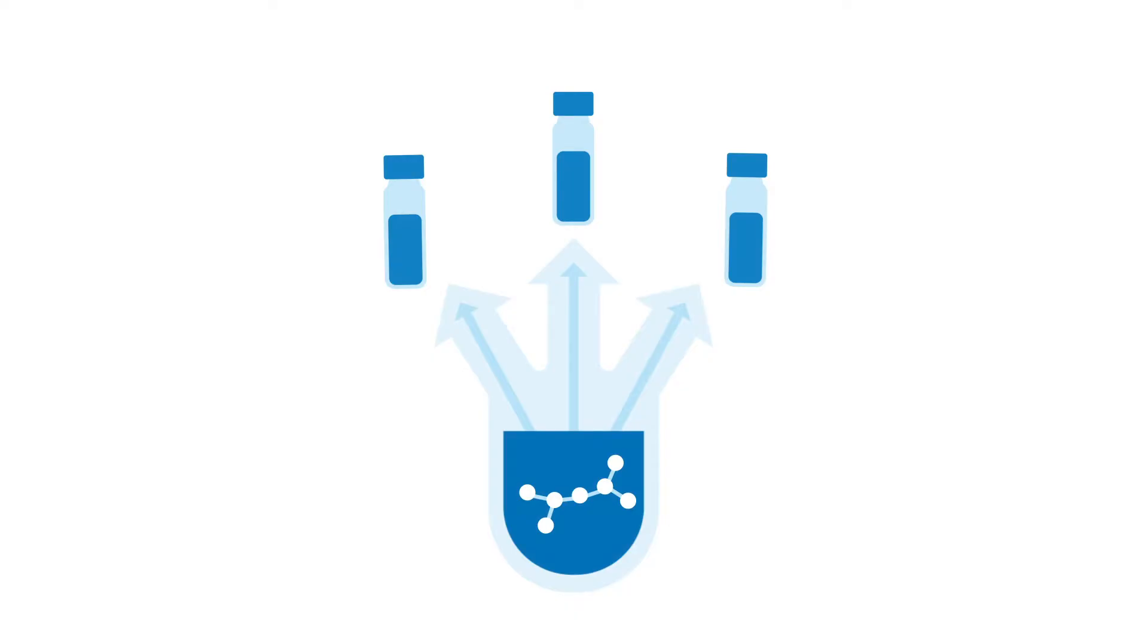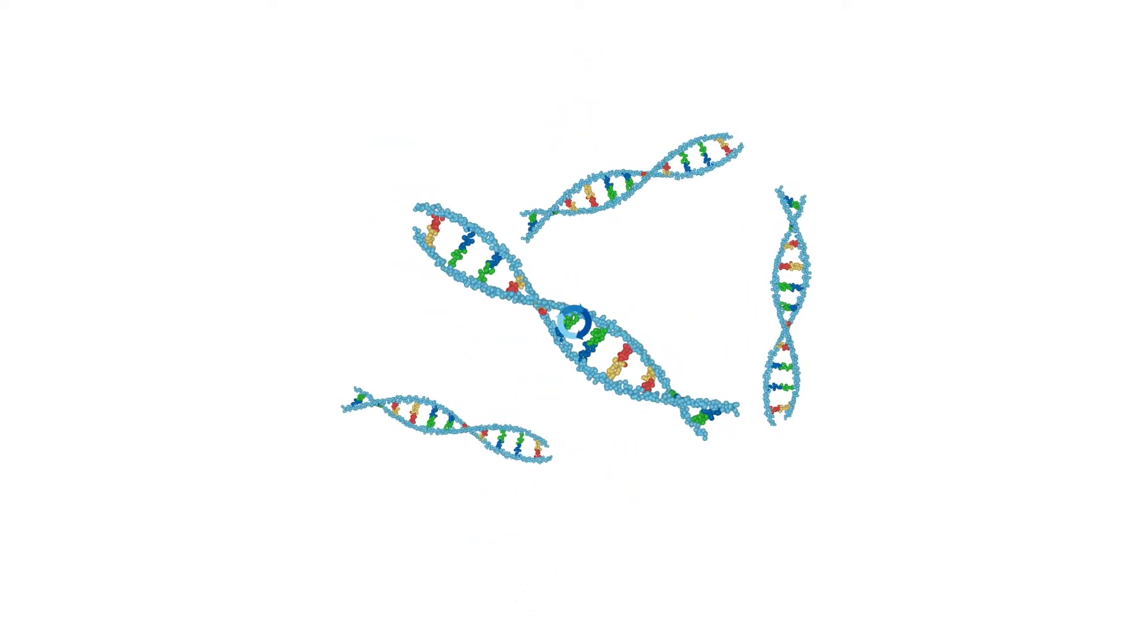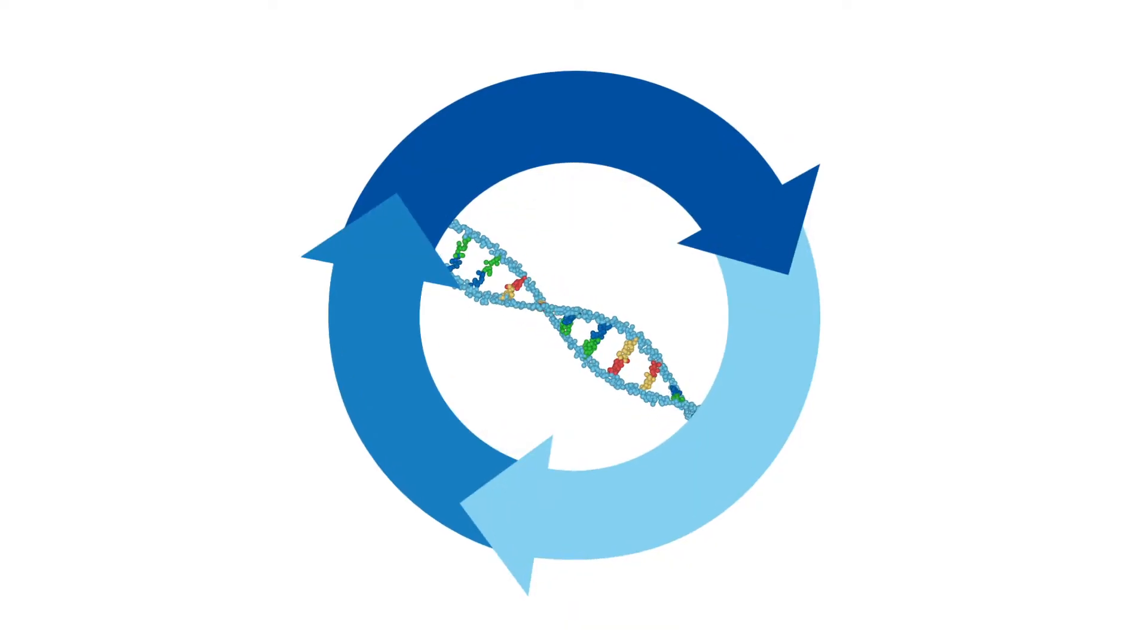SPS and even LPOS methods generally share common steps executed in a cycle. The process begins by linking the first phosphoramidite of the sequence to a solid support group, or resin, using a long chain linker. The cycle of synthesis then begins with the removal of a DMT protection group in the first step, known as detritylation.